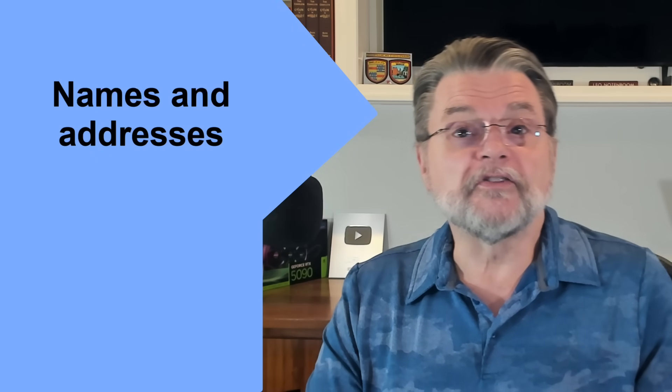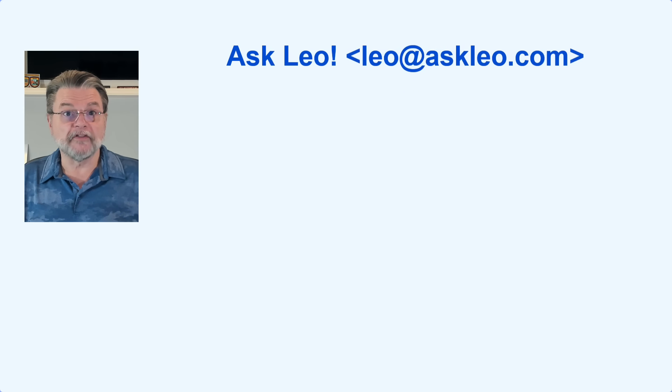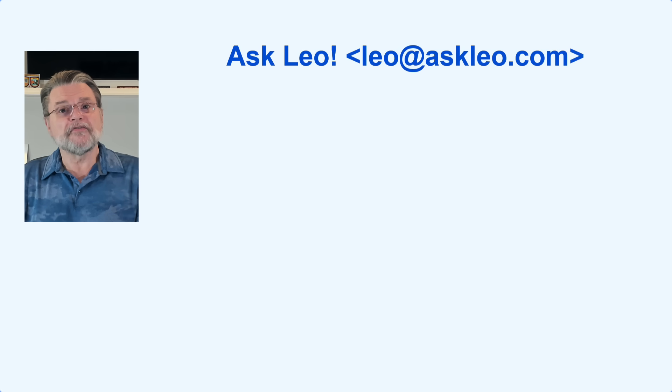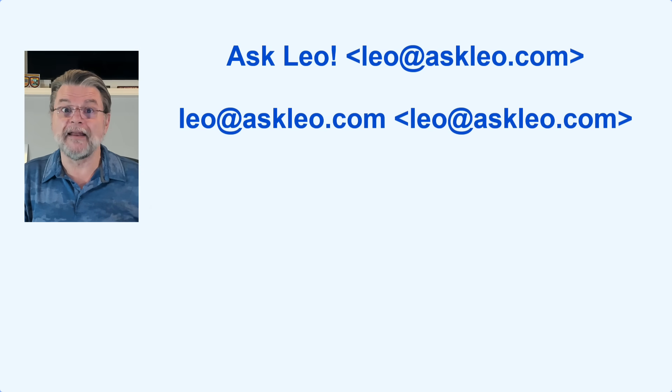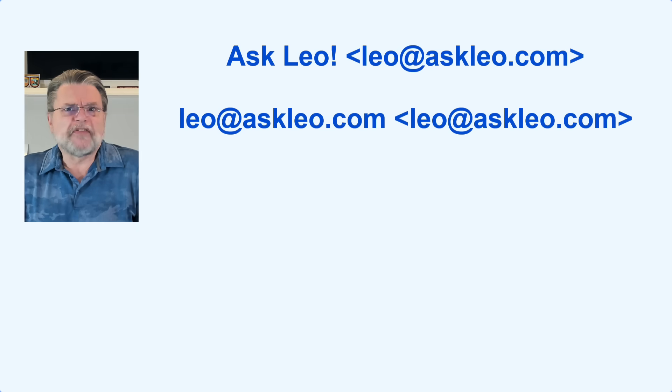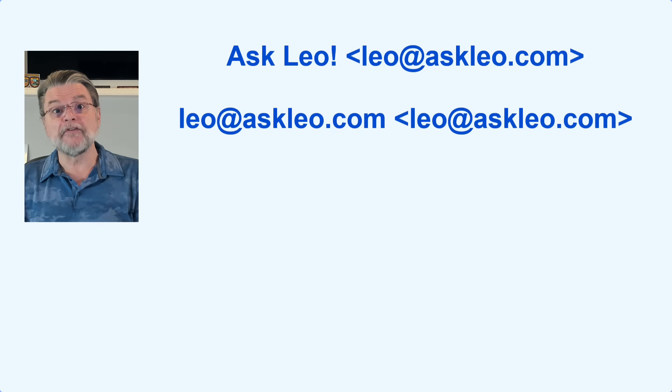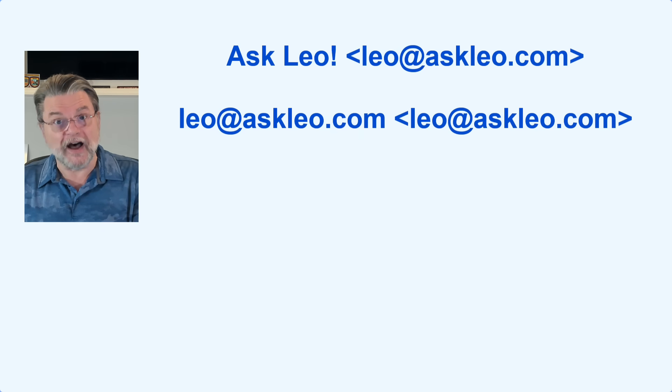Before we get into the details of how things can go wrong, we need to review what makes up an email address. There are two parts: the display name and the email address. They're often displayed together, like 'askleo' and then in angle brackets, 'leo@askleo.com'. The display name is, as its name implies, the text we see and recognize as someone's name. The email address follows it in angle brackets. The first source of confusion is that the display name itself can look like an email address. 'leo@askleo.com' can be both the display name and the email address — but the display name is not the email address.